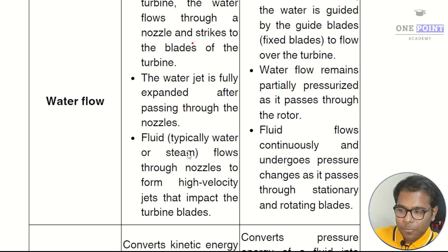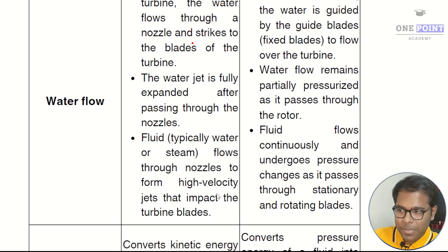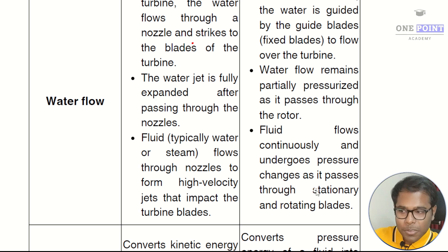In an impulse turbine, fluid — typically water or steam — flows through nozzles to form high-velocity jets that impact the turbine blades. In a reaction turbine, fluid flows continuously and undergoes pressure changes as it passes through the stationary and rotating blades.